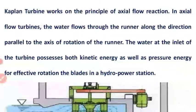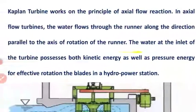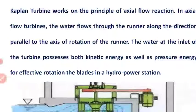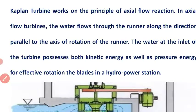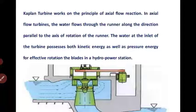The principle of axial flow reaction turbines: in axial flow turbines, the water flows through the runner along the direction parallel to the axis of rotation. The water at the inlet of the turbine possesses both kinetic energy as well as pressure energy for effective rotation of the blades.